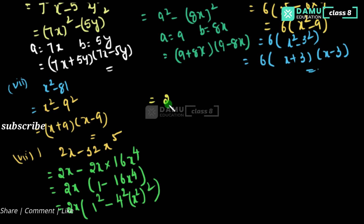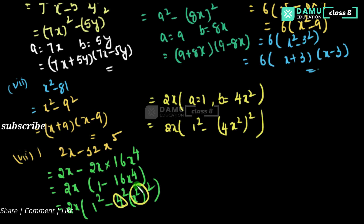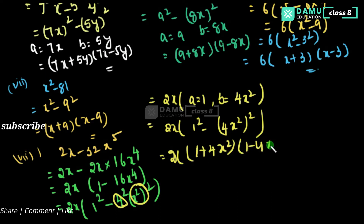Continuing, with a equals 1 and b equals 4x squared, we apply the a squared minus b squared formula to get 2x into 1 plus 4x squared into 1 minus 4x squared. So the final factorization is 2x into 1 plus 4x squared into 1 minus 4x squared.